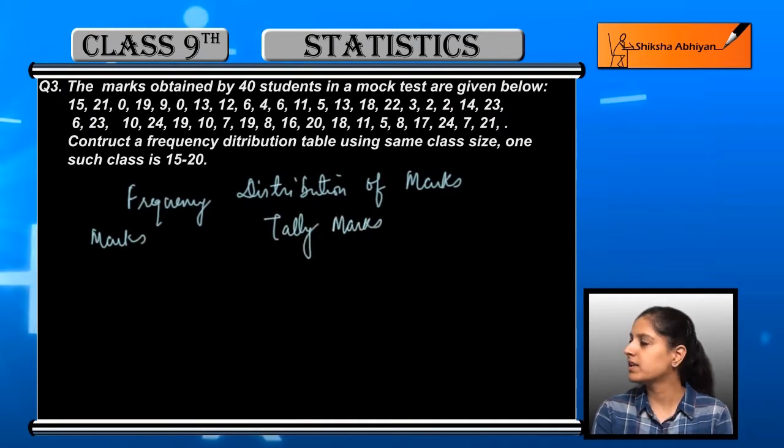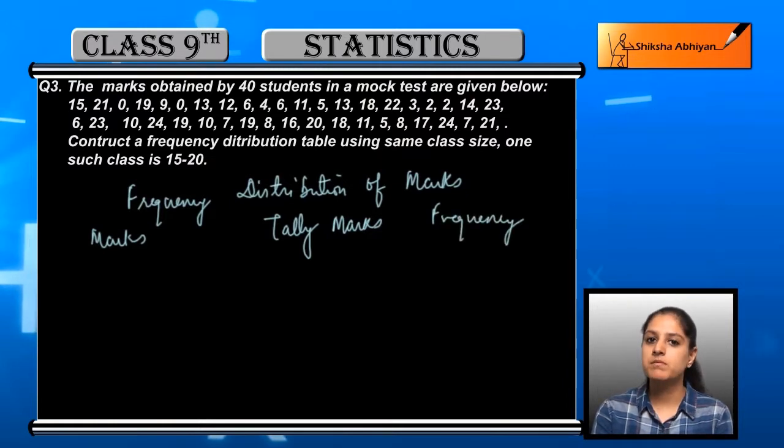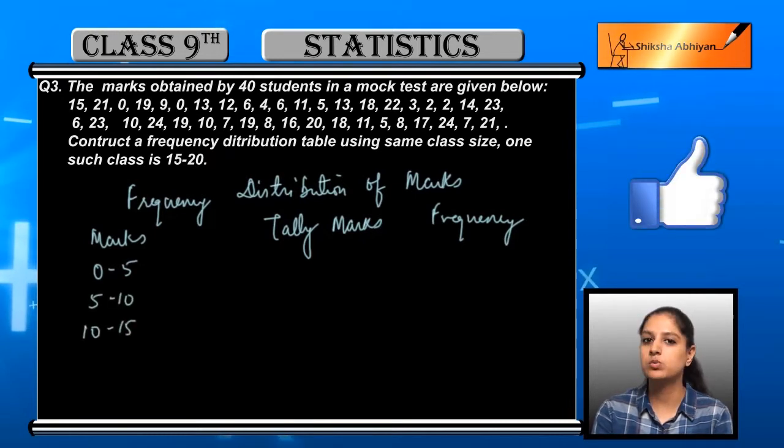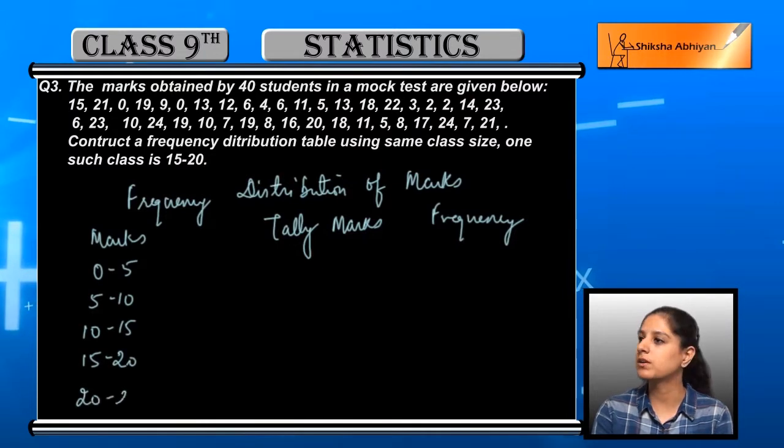First is marks, next is tally marks and the third is frequency. Minimum value is 0 and 5 is the class size, from 0 to 5, 5 to 10, 10 to 15, 15 to 20, 20 to 25. Maximum value is 24.